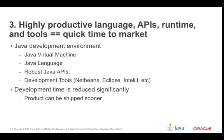Number three: Java is a highly productive language with APIs, runtime, and tools — equaling a quick time to market. The Java development environment can be looked at in two distinct areas. One is the Java development environment itself — the Java Virtual Machine, which executes the bytecodes generated by the Java compiler. The Java language is what we write our code in, and new Lambda APIs are coming in as well. These are all part of the robust Java APIs.